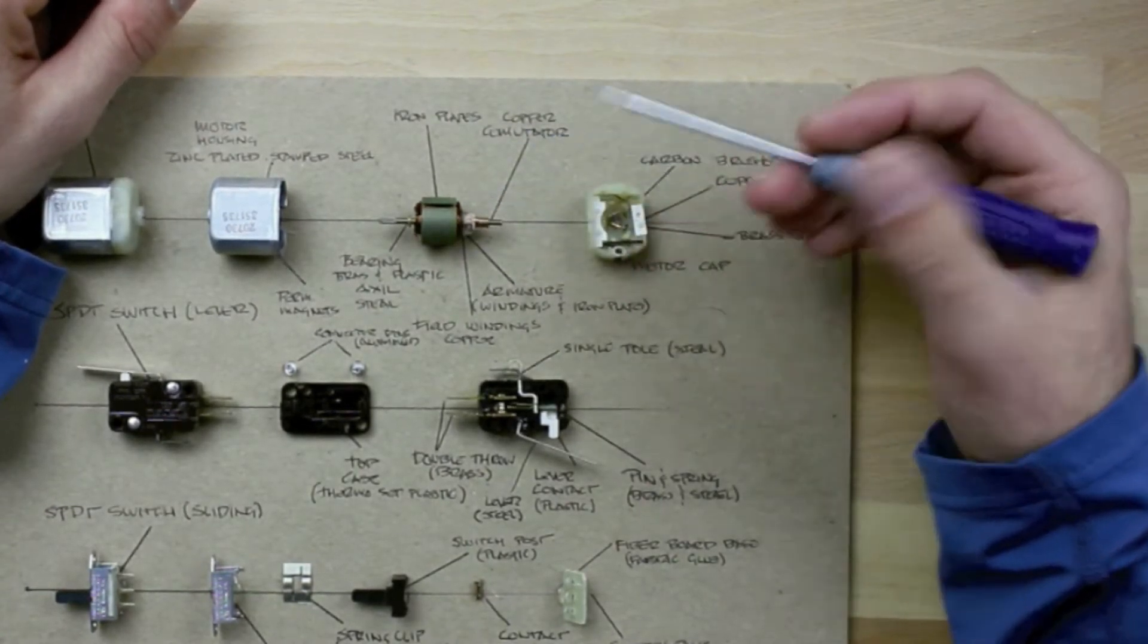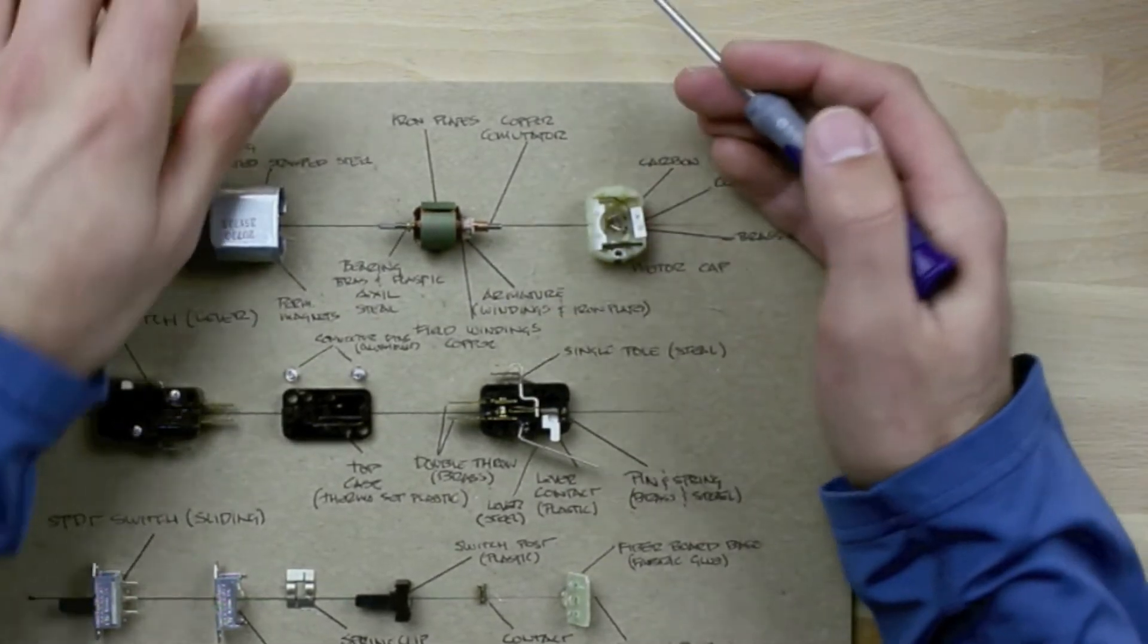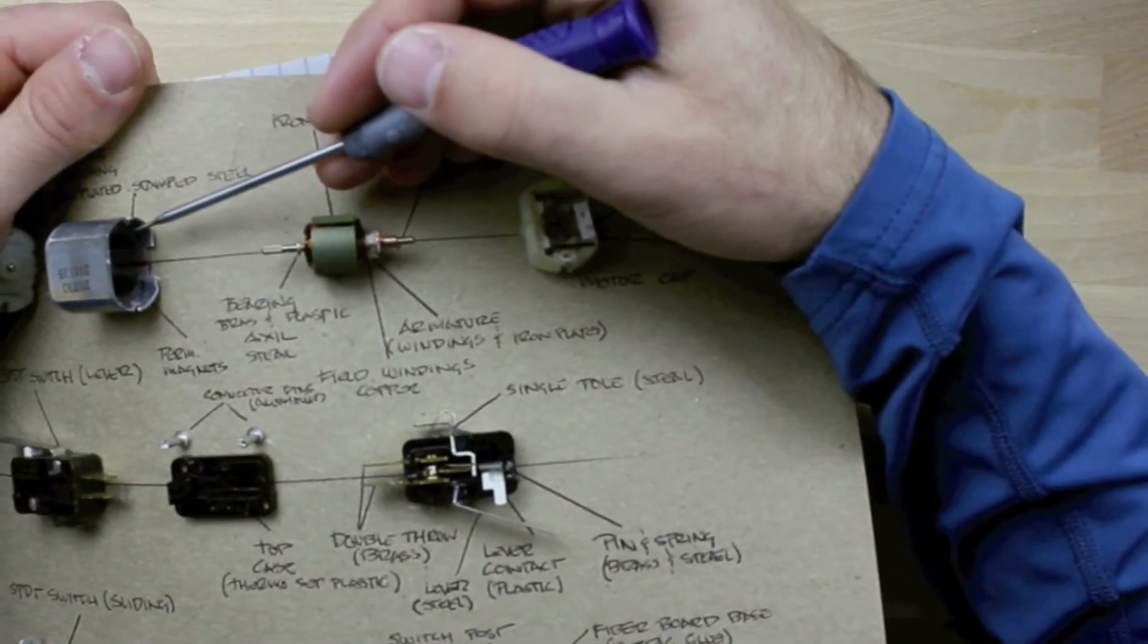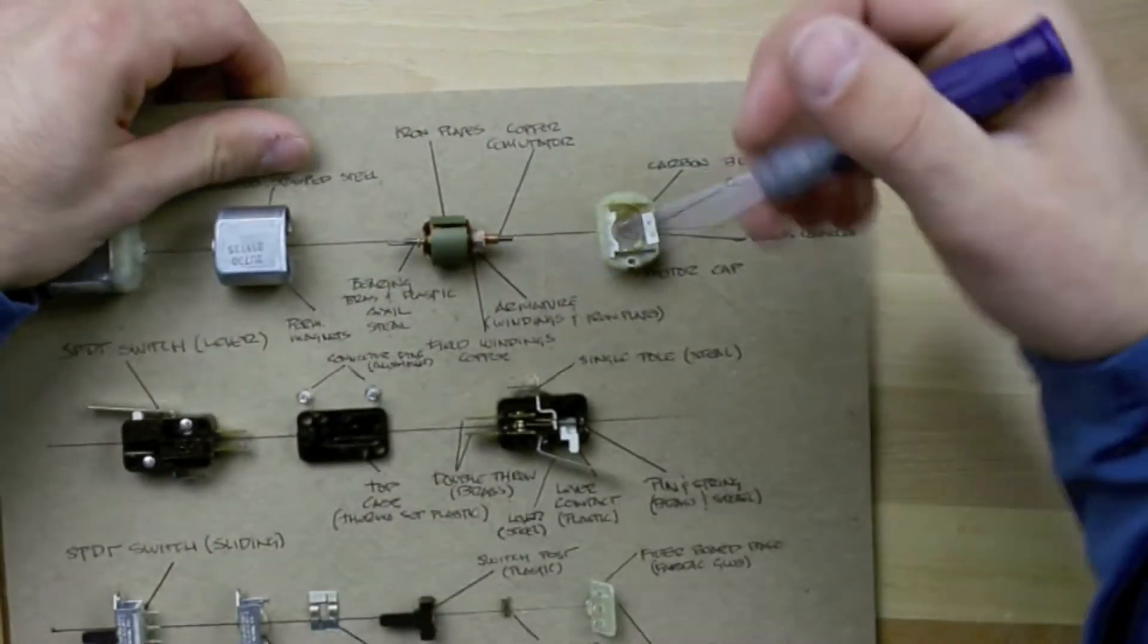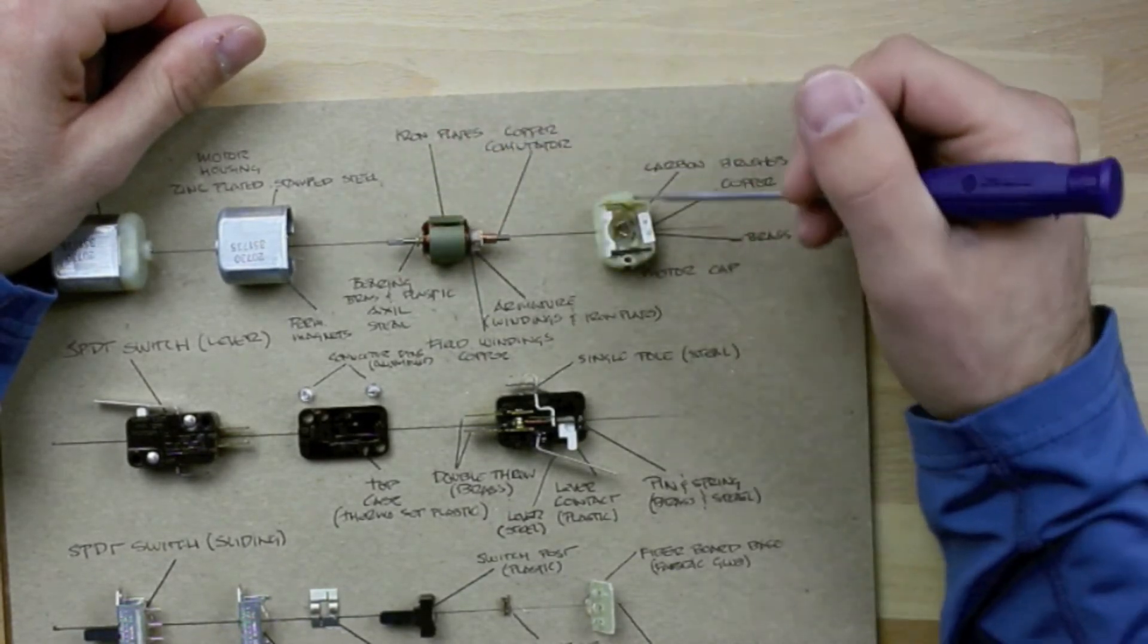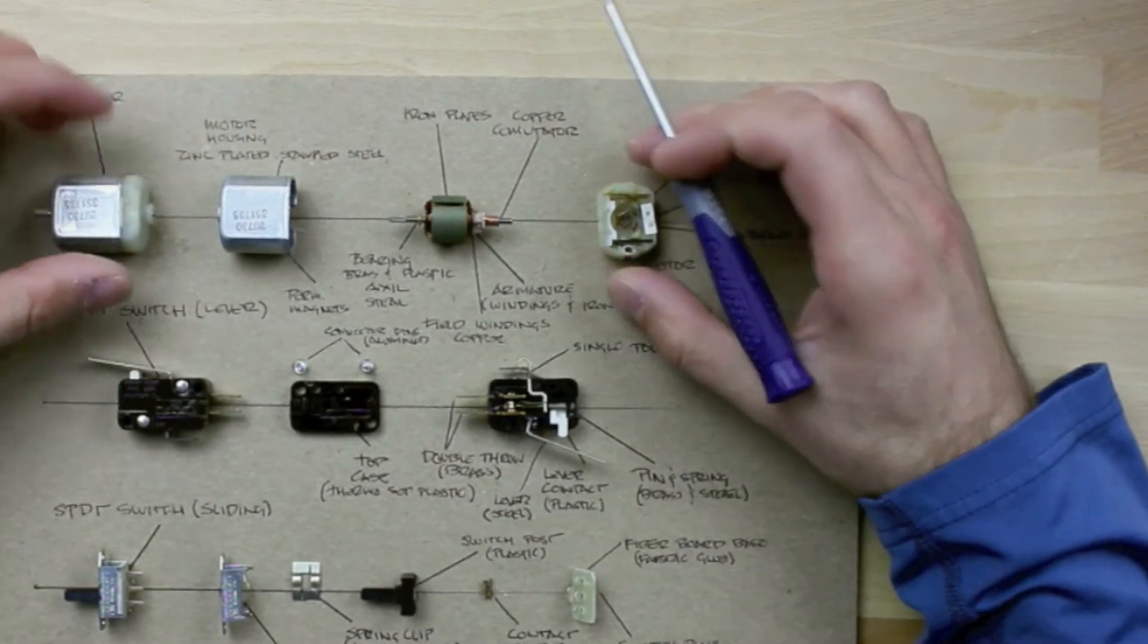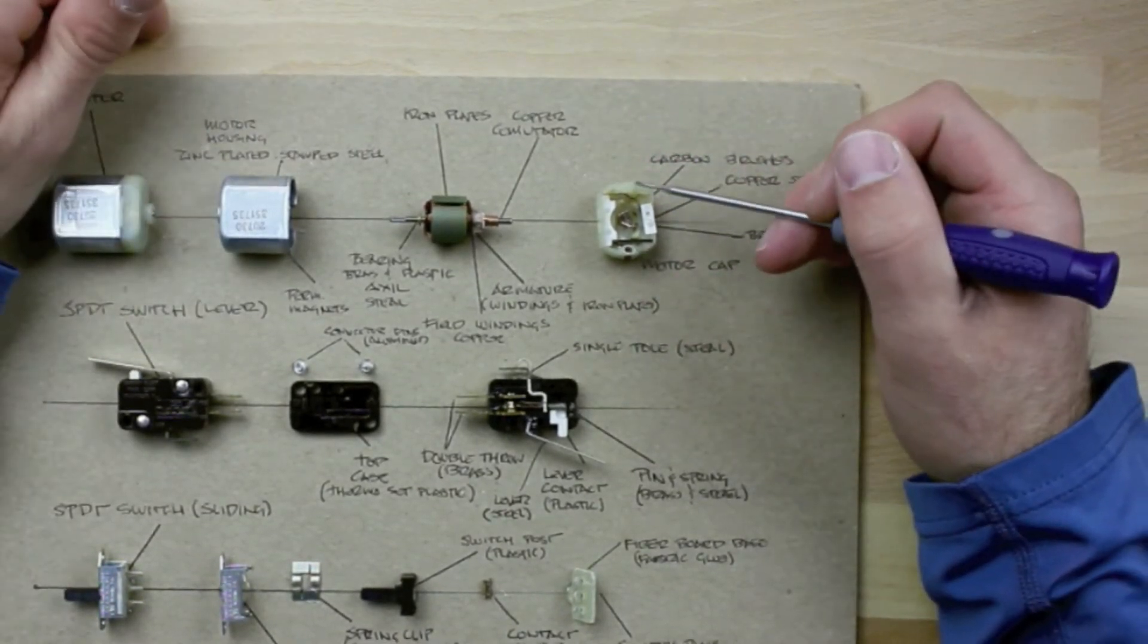The magnet on the other side, the permanent magnet on the other side of the motor, has to be a different field orientation. So it's a north pole magnet. We've got a south pole on one side and a north pole on the other. As the power flows in to the motor from the brush, it goes to the commutator, goes through the field winding, and creates an electromagnetic force which pushes against the permanent magnet.